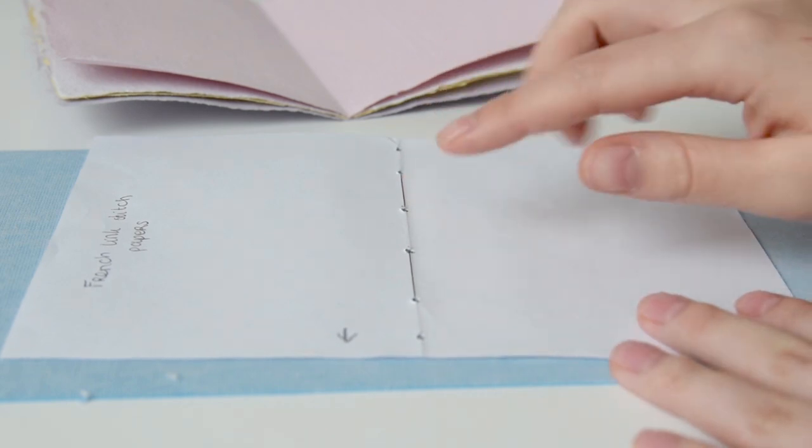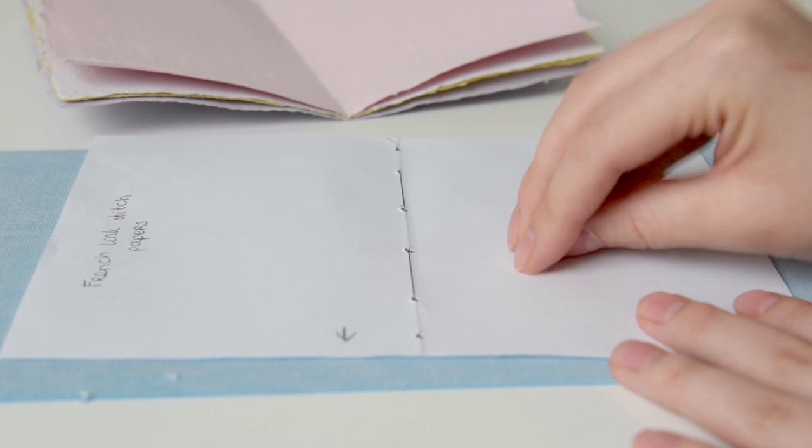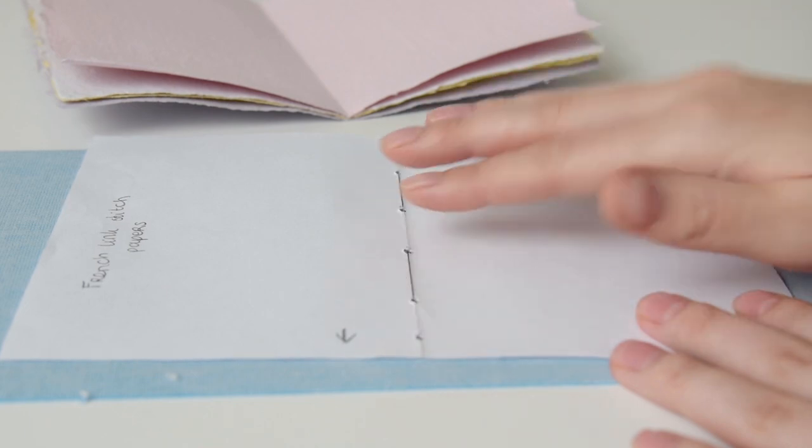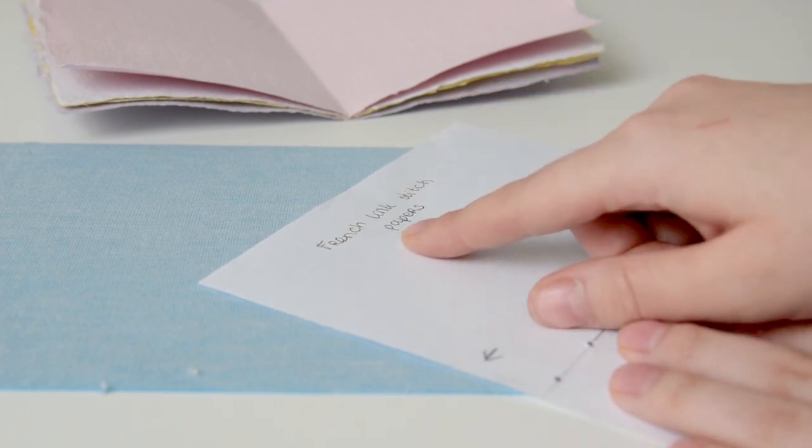If you are using larger paper, you might want to create three lines, maybe even four. That's up to you. You can measure this all exactly if you want, but as long as you are using a template, it doesn't need to be exact. It just needs to be the same for each signature.